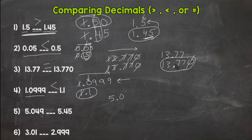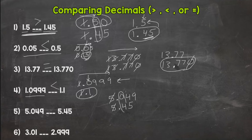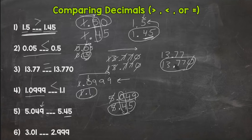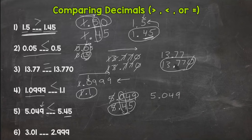Number five: line them up. Can't compare the whole numbers — they're both fives. Look at the tenths place: the four is greater, making five and forty-five hundredths greater than five and forty-nine thousandths. It does not matter that this is forty-nine — the forty-five has greater value because of that four in the tenths place. You would read: five and forty-nine thousandths is less than five and forty-five hundredths. Put a placeholder zero to see that forty-nine thousandths is much less than four hundred fifty thousandths.